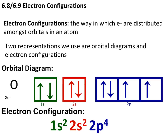Electron configurations are ways that we write out the location of specific electrons within an atom. There are two ways to represent this distribution. The first way is with orbital notation diagrams, where we show both the energy and the orbital type and the electrons present in that orbital. We have a 1s orbital that's filled, a 2s orbital filled with two electrons, and a 2p orbital filled with four electrons.